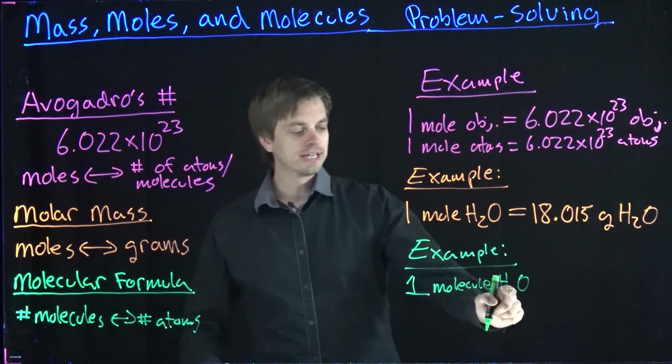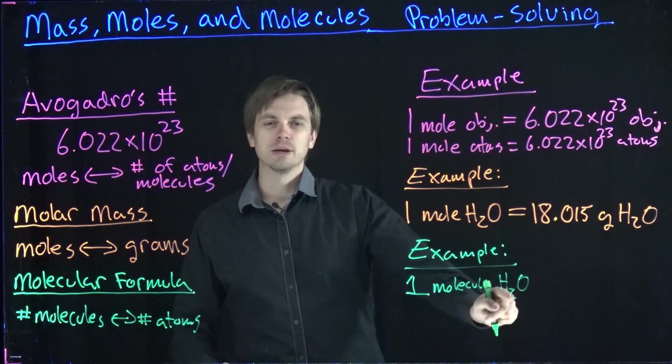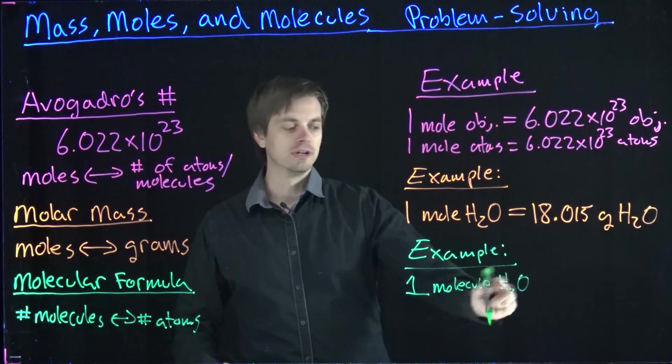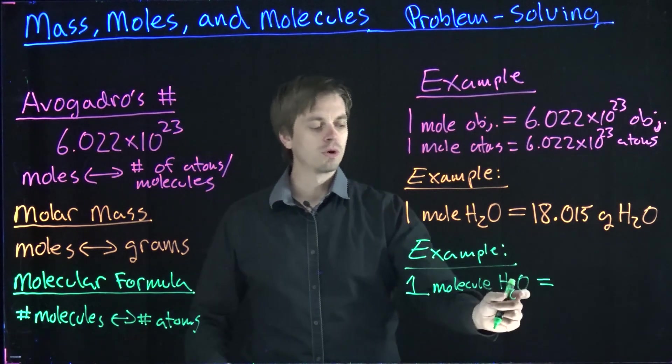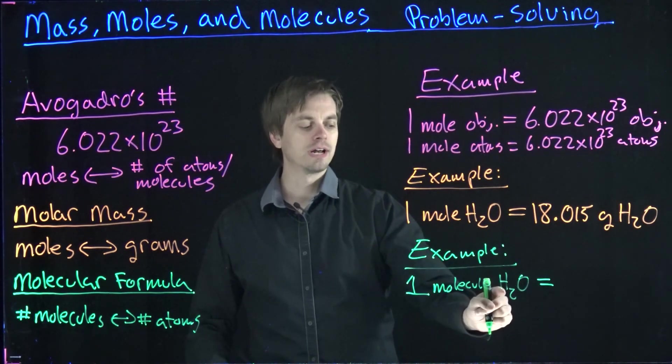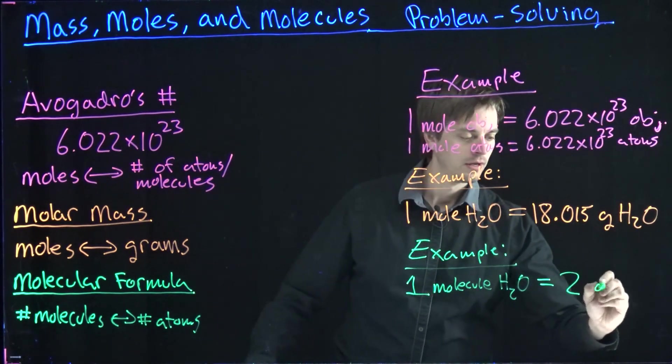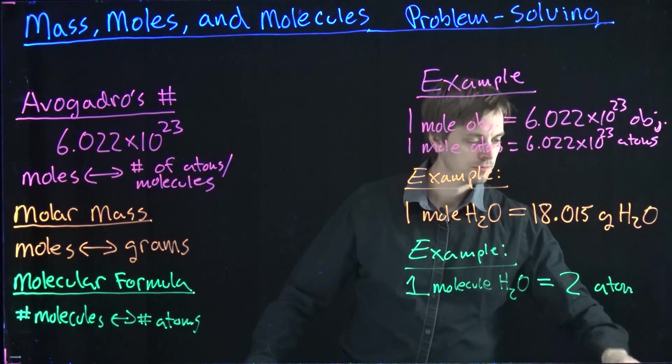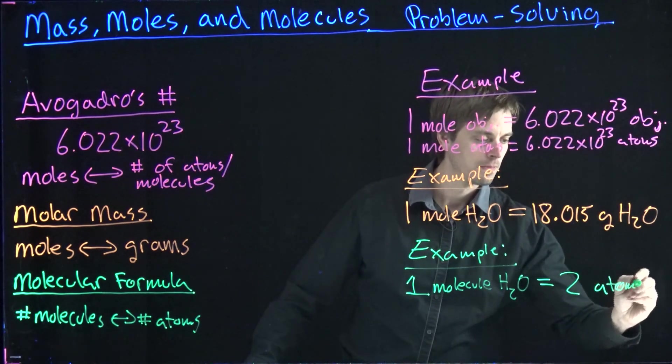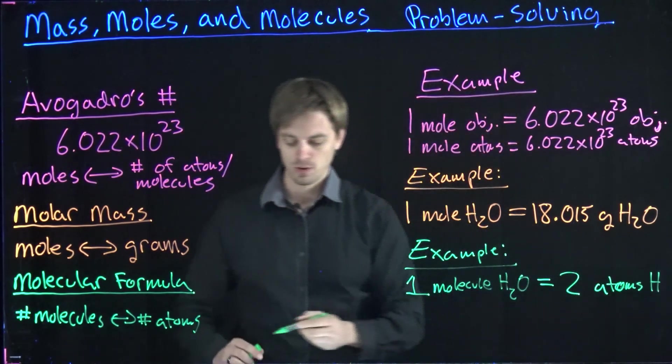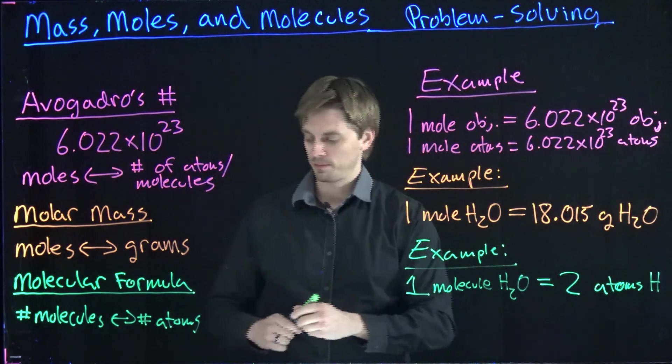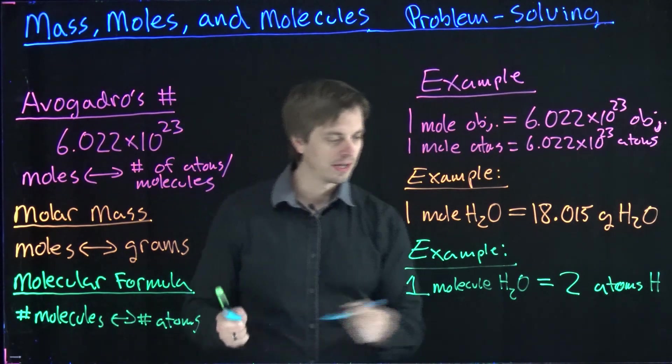If I have one molecule of water, a single water molecule, looking at that molecular formula I see a subscript 2 there with the hydrogen. So that means for every one water molecule that we have, we have two hydrogen atoms. That two is coming from the subscript 2 right there.